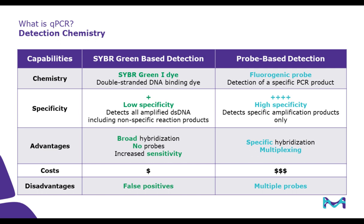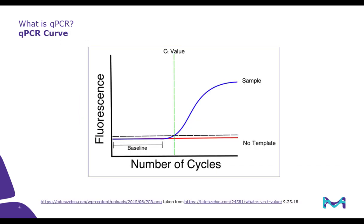Probe-based qPCR may be the method of choice when specificity is most important. The hybridization between the probe and the target is required to generate fluorescence, which can significantly reduce background noise and false positives. It is possible to label probes with different distinguishable reporter dyes, which allows researchers to amplify two distinct sequences in a single reaction tube. The major disadvantage of probe-based detection includes the cost and the fact that each target sequence requires a different probe.